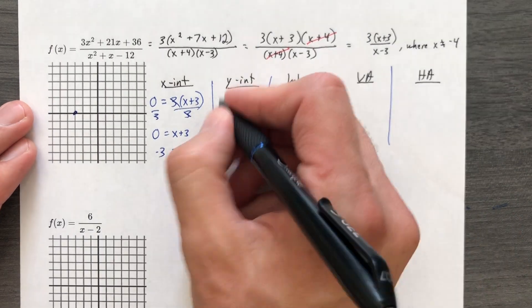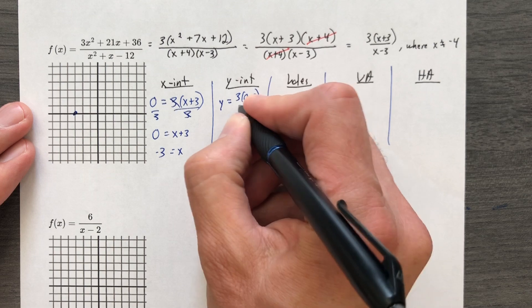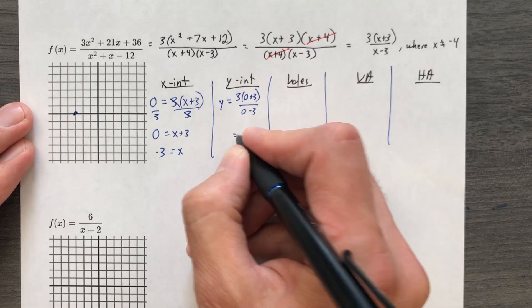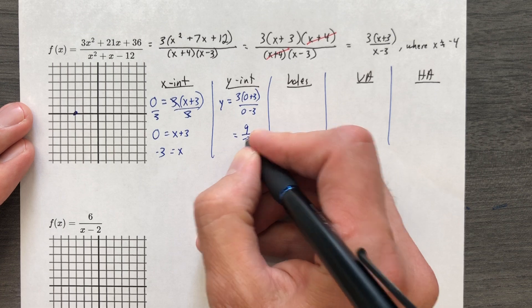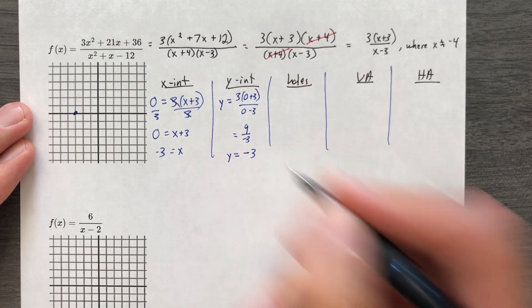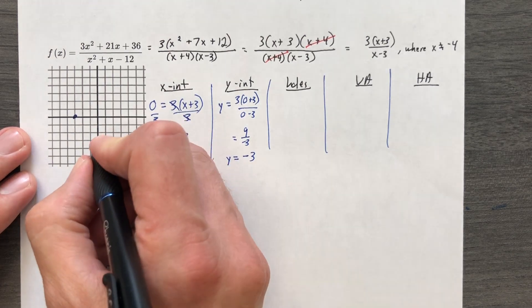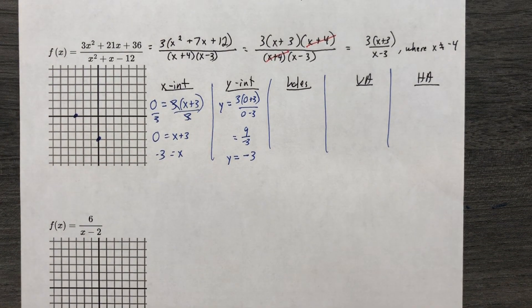Let's find the y-intercept. Y equals, use the reduced form, 3, 0 plus 3 over 0 minus 3. It's going to give me 3 times 3. That's 9 over negative 3. That means my y-intercept is going to be negative 3. So y equals negative 3. You want a shortcut on this one too?